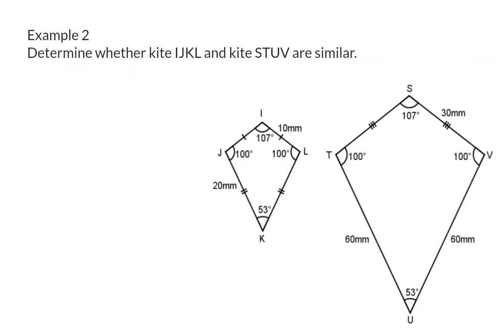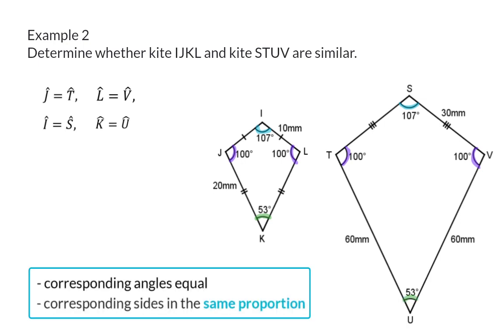Example 2: Determine whether kite IJKL and kite STUV are similar. I'm going to start off checking whether the corresponding angles are equal. Angle J is equal to angle T, and angle L is also equal to angle V. I is equal to S, and K is the same size as U. This means that all the corresponding angles are equal.